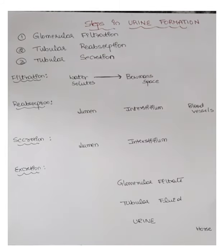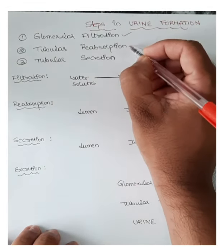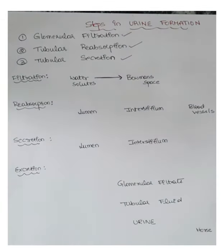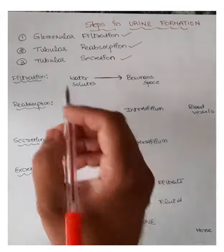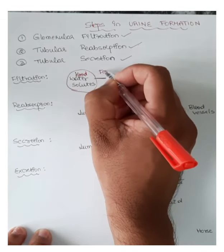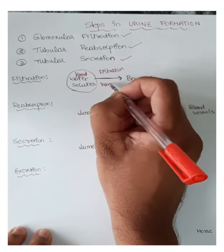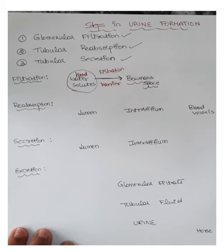Welcome to Lecture 4 on excretory physiology. Today we are discussing the steps in urine formation. There are three essential steps: the first is glomerular filtration, second is tubular reabsorption, and third is tubular secretion. Filtration refers to the process by which water and solutes present in the blood leave the vascular system through filtration barriers and enter inside the Bowman's space.